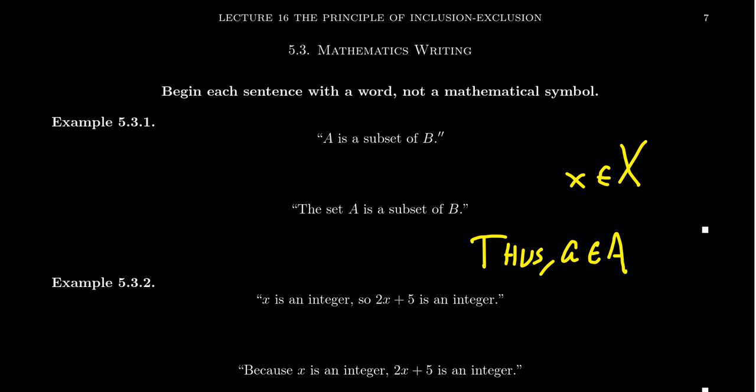And by all means, that word can sometimes be something like thus, comma. And thus, A is an element of A. That's okay. It doesn't have to be like a lengthy thesis that starts the sentence. But a single word can make a big difference.